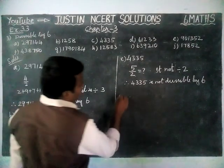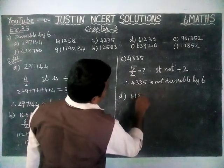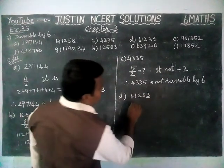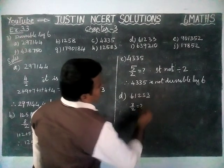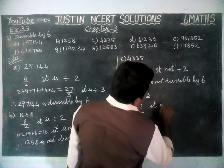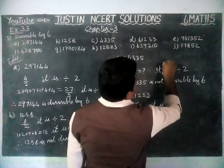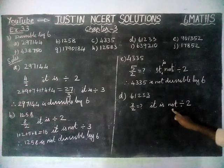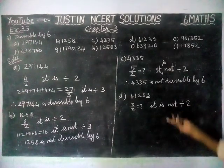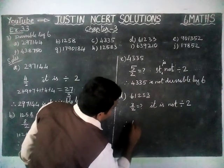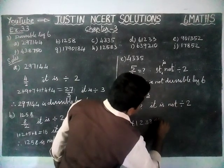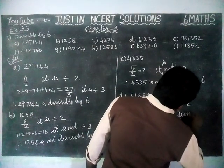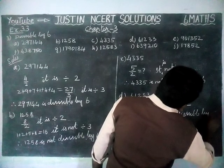Next, option D — 61,233. Here, the 1's place is 3. This 3 is not divisible by 2. Therefore, it is not divisible by 2. If the given number is not divisible by 2, automatically that number is not divisible by 6. Therefore, 61,233 is not divisible by 6.